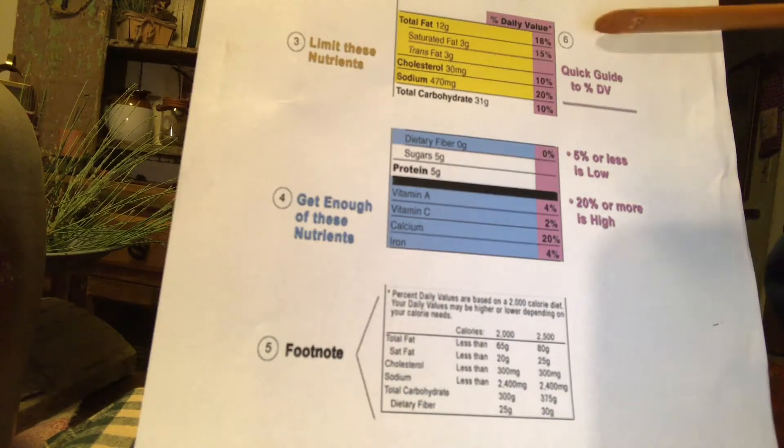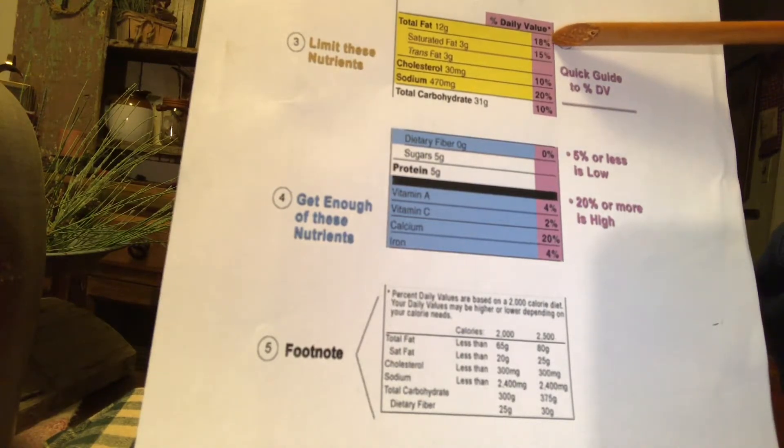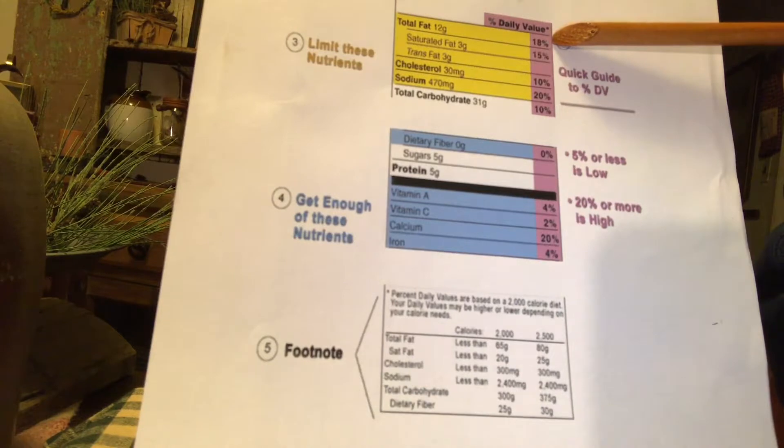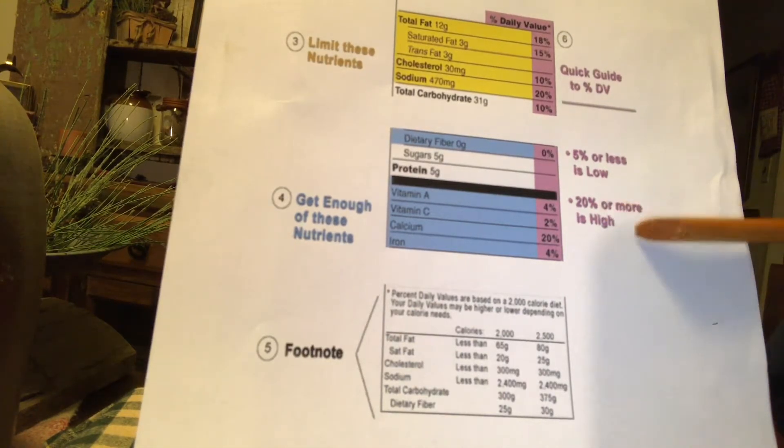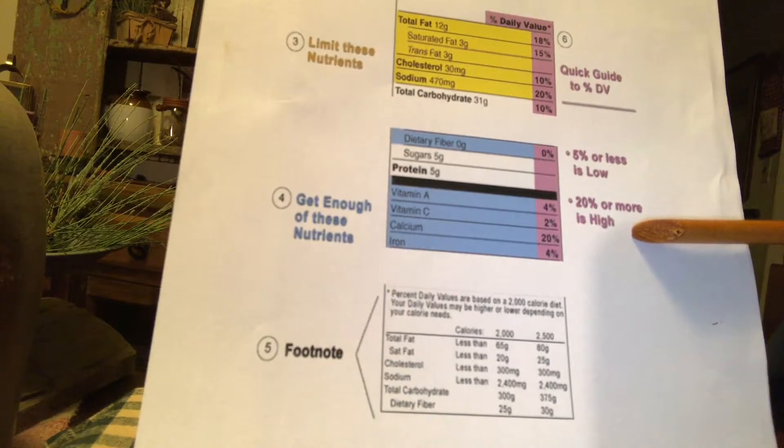So, if we go back to the fat, it says here in this column that the fat is 18%. So, that, you have to remember, is one serving. So, if you use this guide, 18% compared to, say, the 20%, then that would mean it's just falling right under it, possibly being considered a high-fat type of a product.